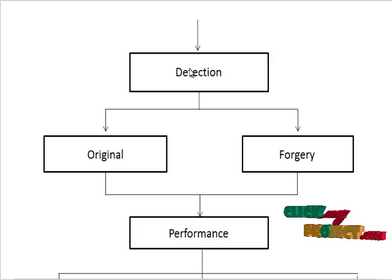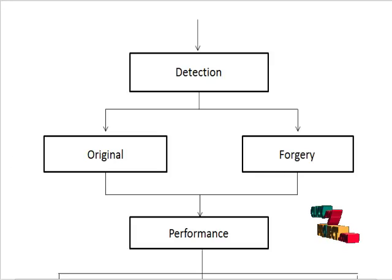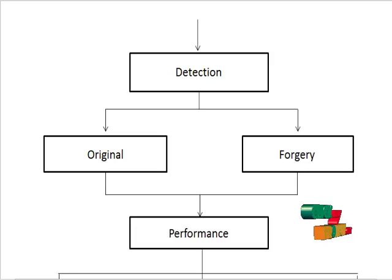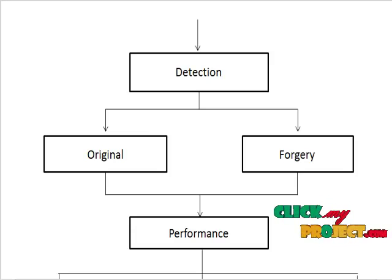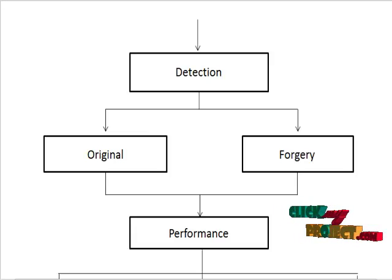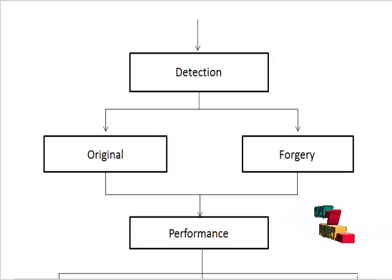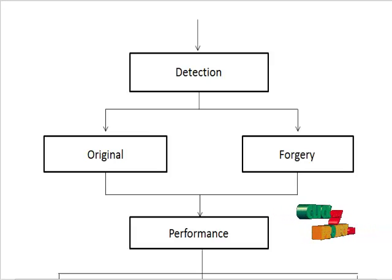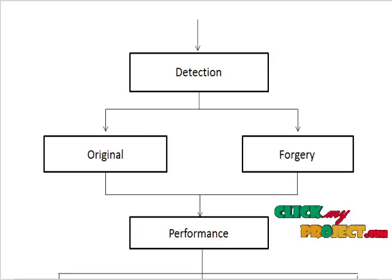Then in the detection step, we are identifying whether the signature is original or forgery. After feature extraction, we train the original signature image and forgery signature image separately. Then after training, we calculate the minimum distance for the signature image using Euclidean distances, and after that, we can detect whether the signature image is original or forgery.